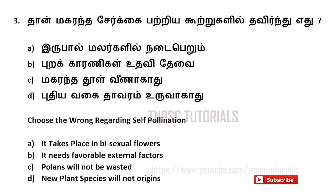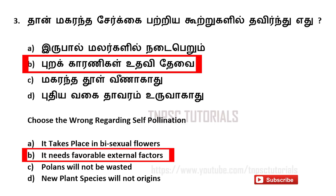Third one. Choose the wrong statement regarding self-pollination. A) It takes place in bisexual flowers. B) It needs favorable external factors. C) Pollens will not be wasted. D) New plant species will not originate. And the answer is B — it needs favorable external factors.